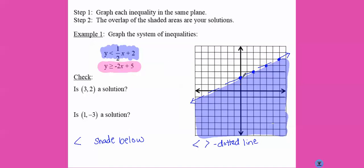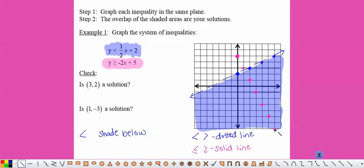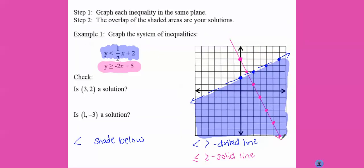Let's start at the y-intercept of positive five, and I'm going to go down two over one. Since it has the or equal to line underneath, for those we use a solid line. Here we want greater than, so we're going to shade above the line.